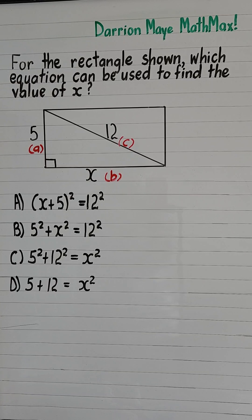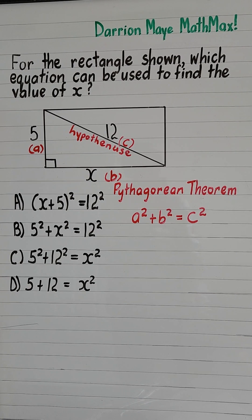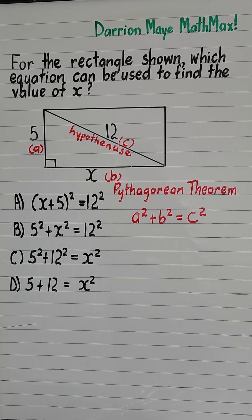In a right-angled triangle, the longest side, which is the side opposite the right angle, is called the hypotenuse, and that is side C. In a right-angled triangle, we can use the Pythagorean theorem to find missing sides.